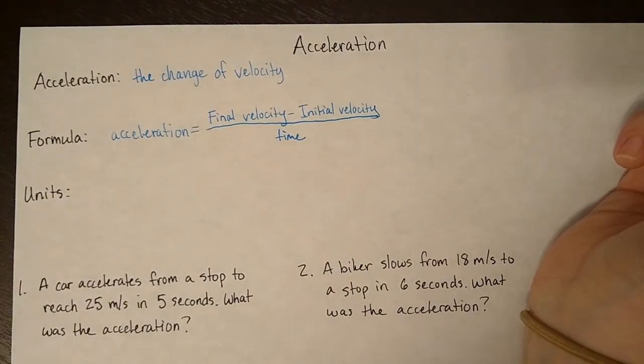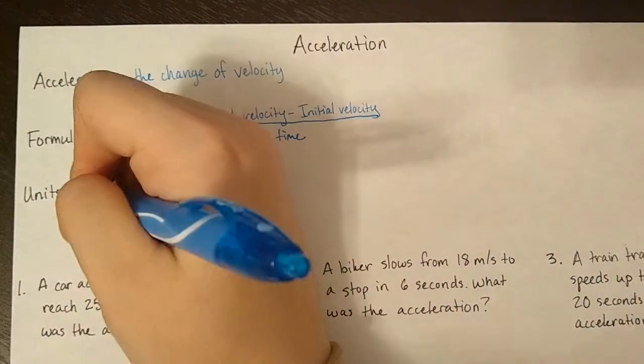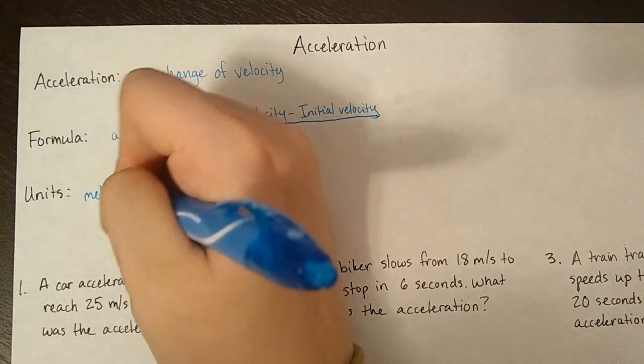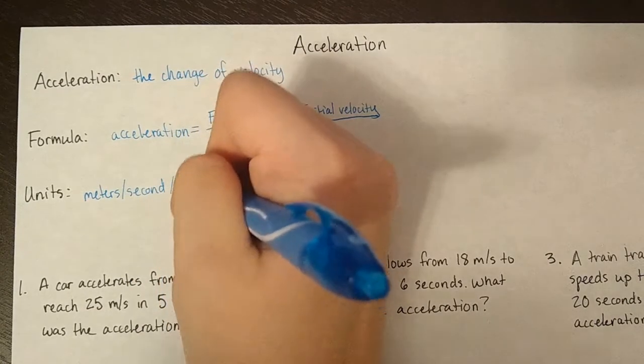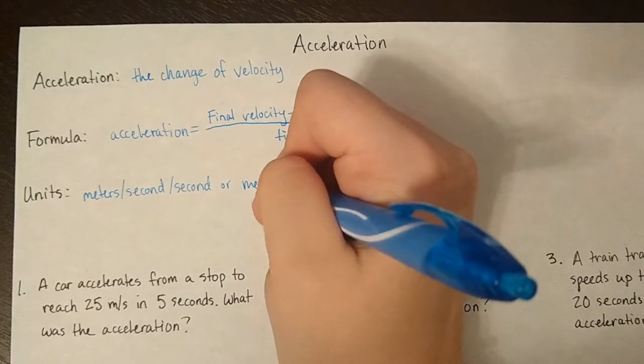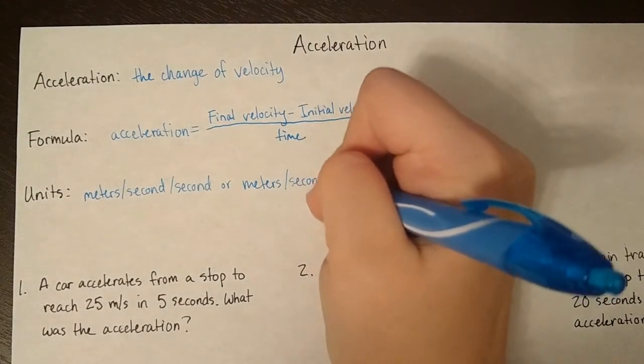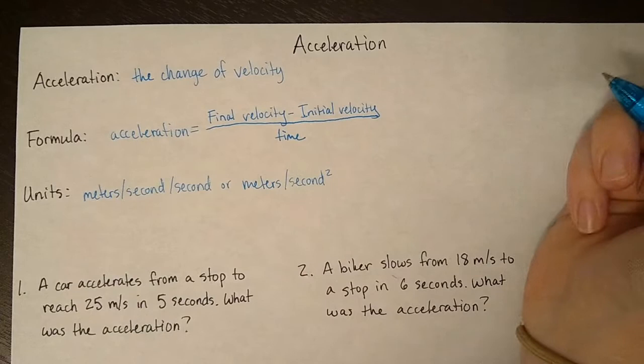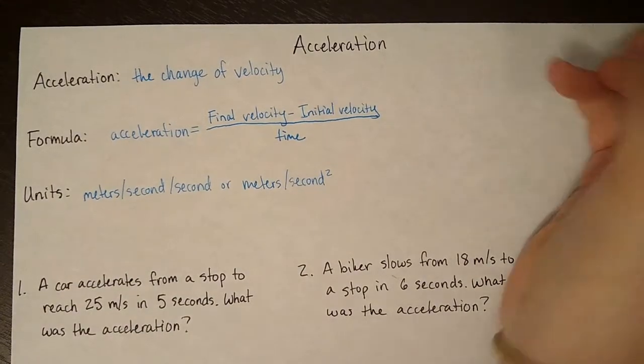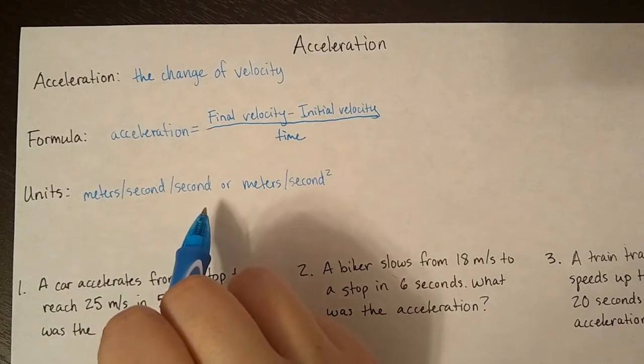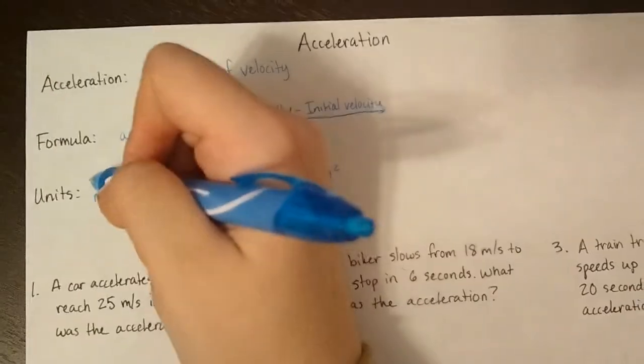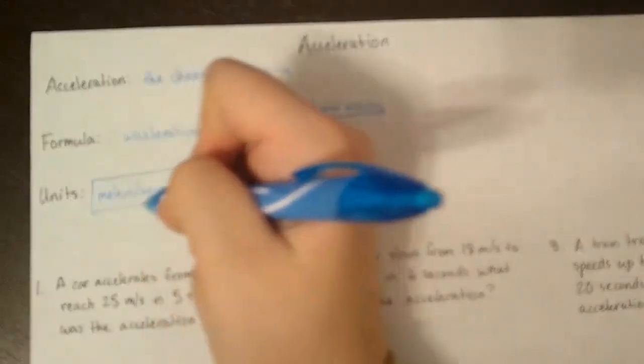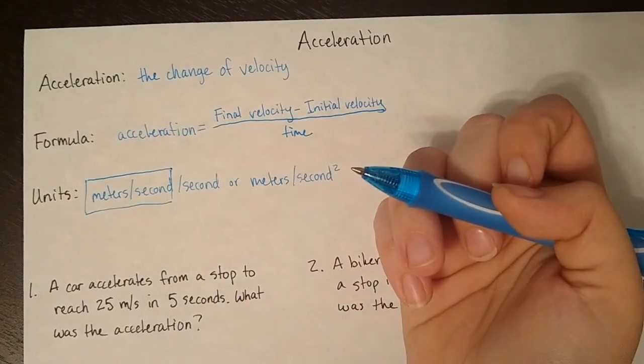Now this is where it starts to get a little weird, and that's the units. So you may have seen something like this. You have meters per second per second, or meters per second squared. Both of these are valid acceleration units. I would recommend doing something more along these lines, because basically what this boils down to is a unit of velocity divided by time.